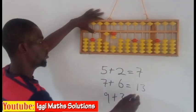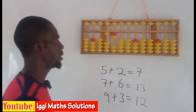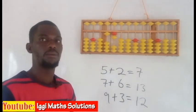So therefore, 9 plus 3 is 12. So this is how to perform simple additions with abacus. Thank you very much for watching.